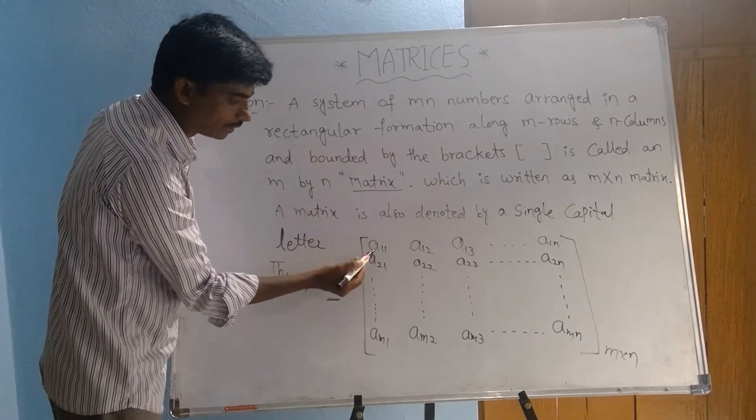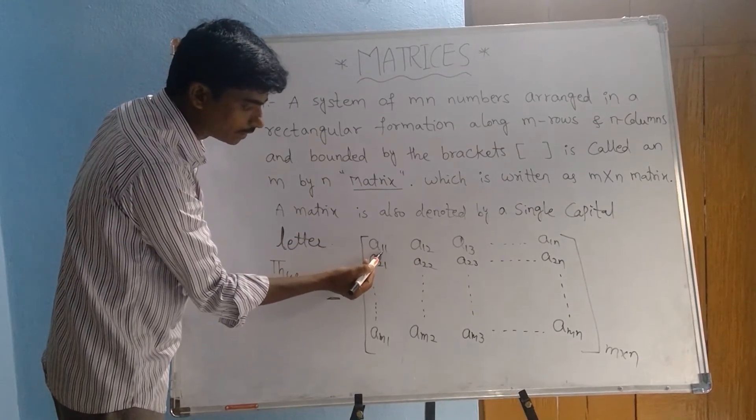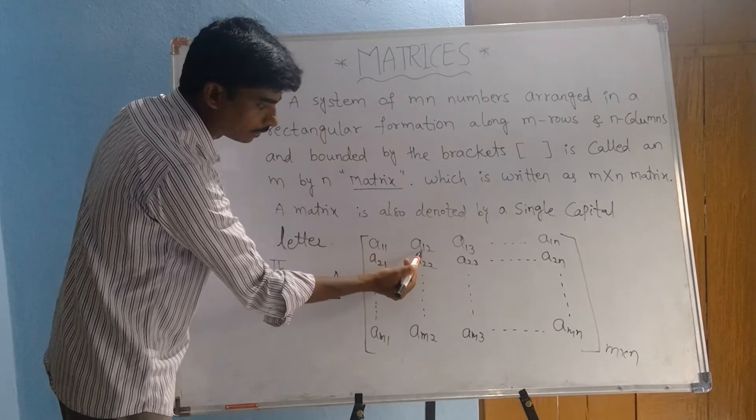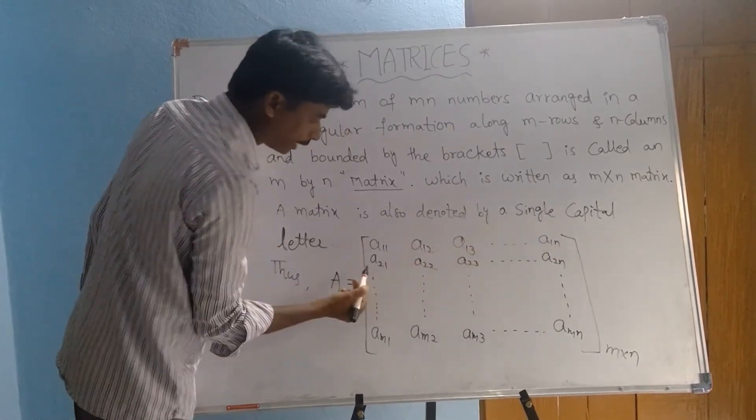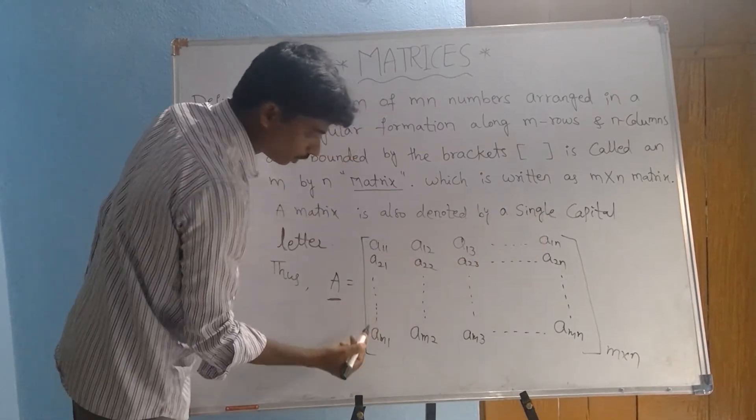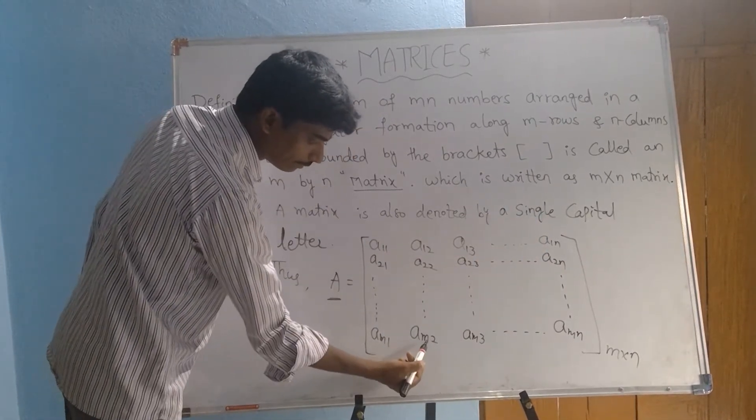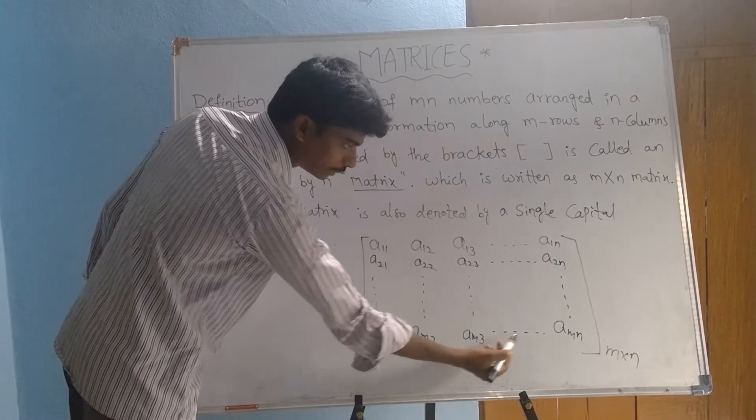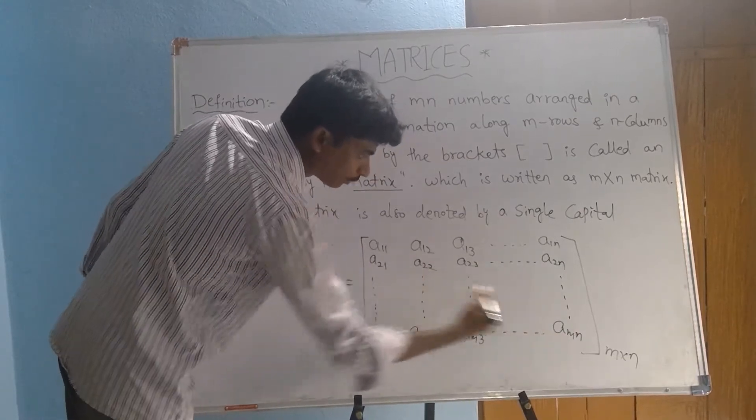We have to taken here A11, 11 means here first row, first column element. A12, A13, so on A1N, A21, A22, A23, so on A2N, so on AMN, AM2, AM3, so on AMN. These are rows.